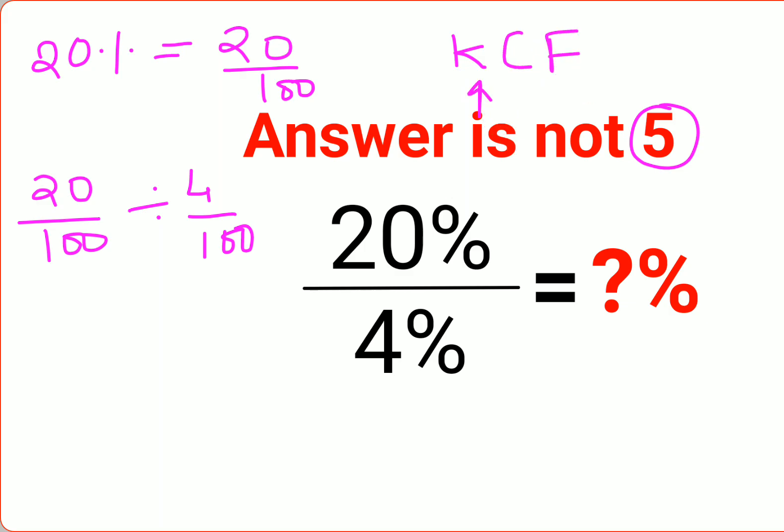KCF: where K stands for keeping the first fraction as it is, C stands for changing the division sign to multiplication, and F stands for flipping or taking the reciprocal of 4 upon 100, which is 100 upon 4. So this and this gets cancelled—this is 1 and 5.